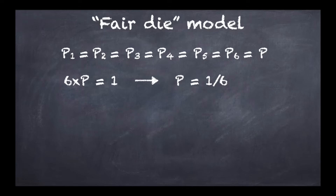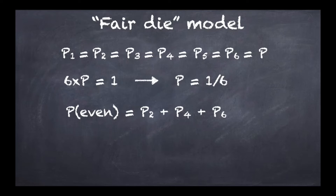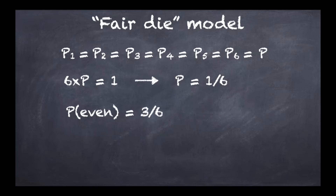Coming back to our even problem, the probability of finding an even outcome after one throw of the die is the sum of p2, p4, and p6. Replacing by the values, this is 1/6 plus 1/6 plus 1/6, which gives us 3/6. We can simplify further to the equivalent fraction 1 over 2, but instead I want to reinterpret this in terms of a very common formula.